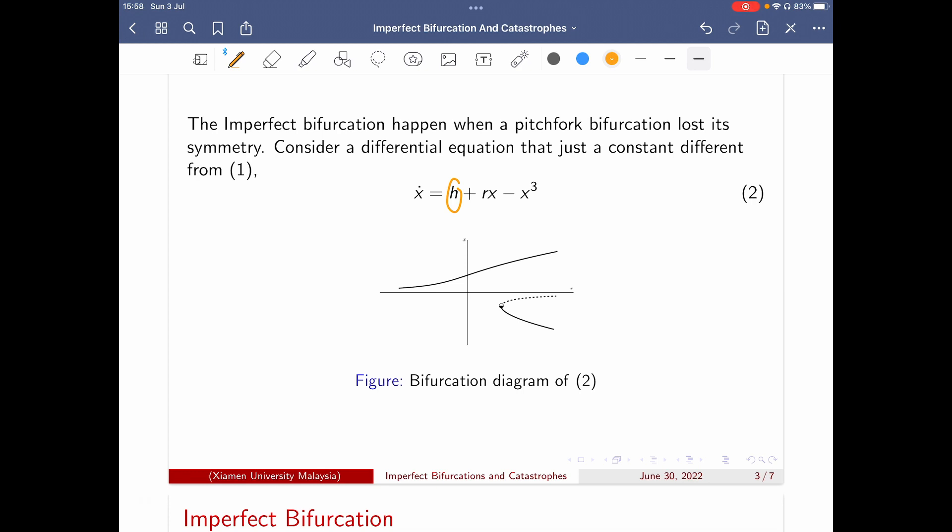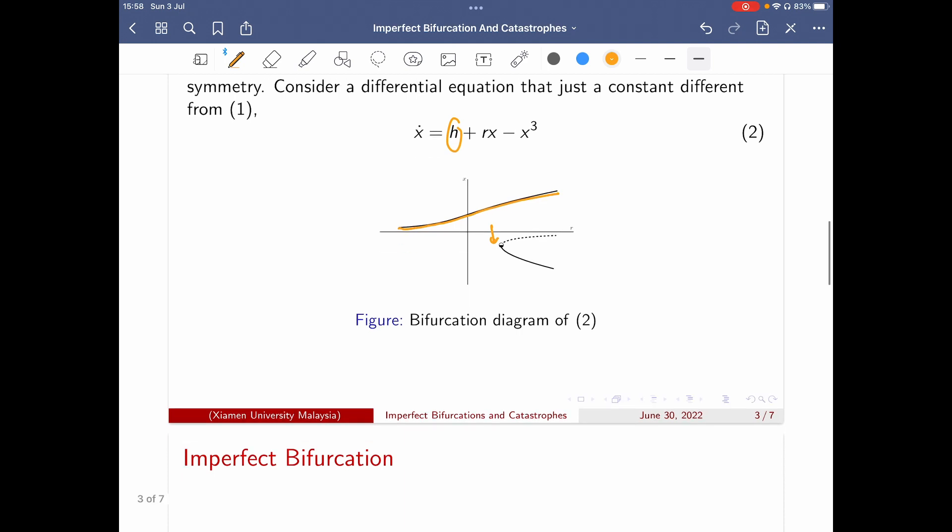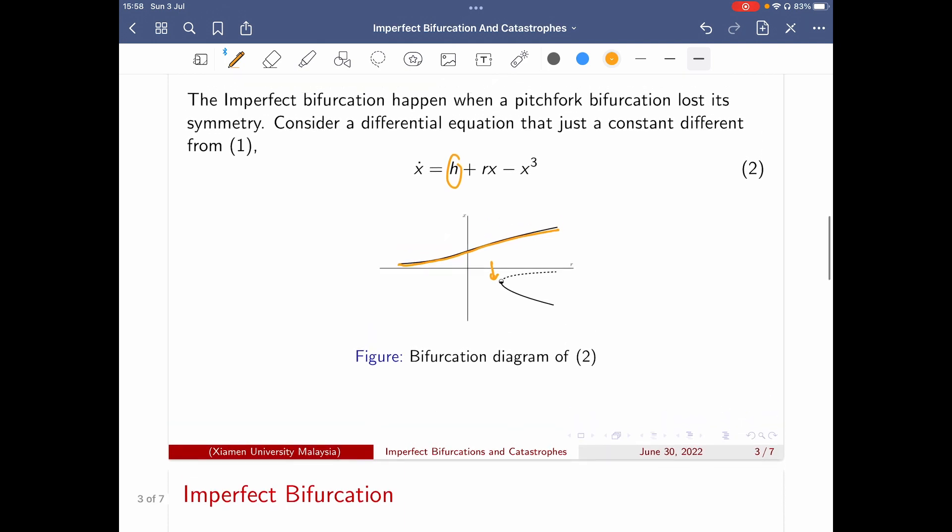So in this bifurcation, you can see that everything is not happening exactly like just in one point just now. Everything just happened to be at r equal to zero. But this one, you can see that there's lower saddle points at the negative parts and have a constant fixed point on the top, a constant stable fixed point on the positive part.